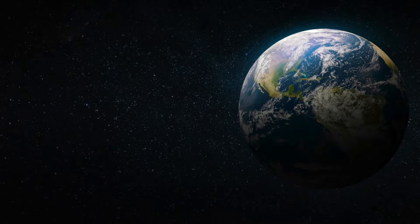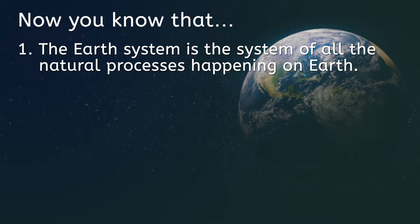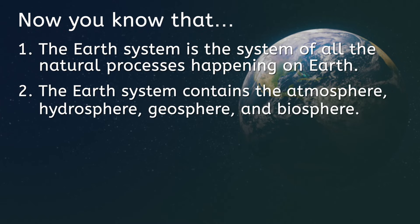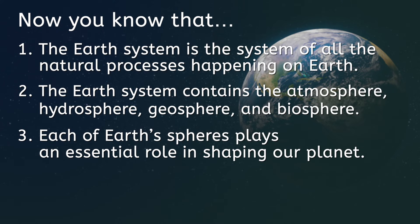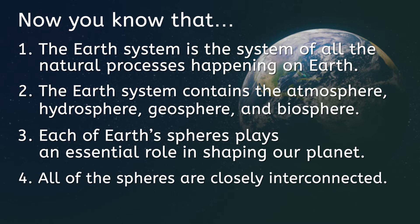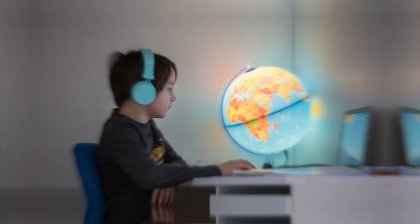So, let's recap what we've learned today. You now know that the Earth system is the system of all the natural processes happening on Earth. The Earth system contains the atmosphere, hydrosphere, geosphere, and biosphere. Each of Earth's spheres plays an essential role in shaping our planet, and all of the different spheres are closely interconnected. Be sure to check out the engaging practice games and thought-provoking PDF extension activities that go with this lesson. They'll help you get ready for our next lesson, where we'll explore some of the cycles that happen within these spheres. And remember, in Earth science, as in life, you rock!